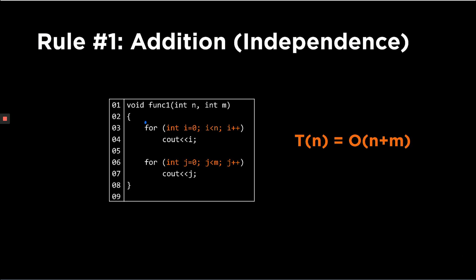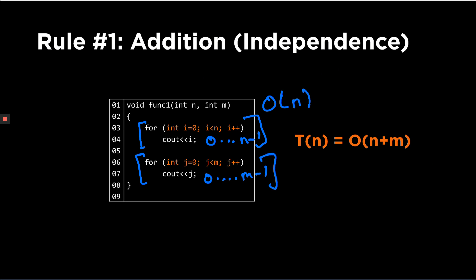Here we have an example where we have a program that has two loops which are independent of each other. What I mean by independent is once the first loop ends then the second loop starts — it is not inside of another loop, in that case they would be dependent. The first loop is running from 0 to n minus 1, or n times. The second one runs from 0 to m minus 1, so the individual complexities would be O(n) and O(m).